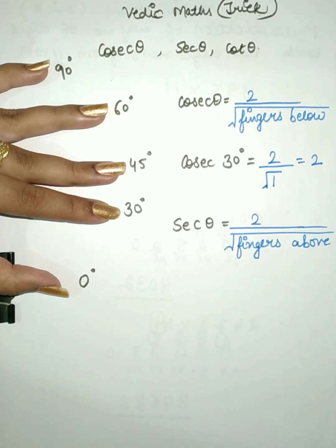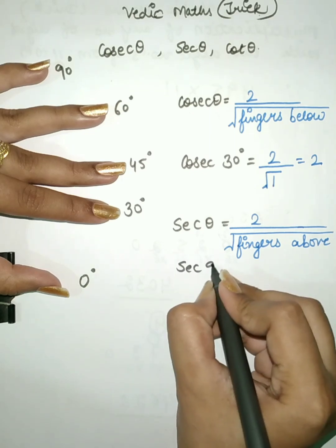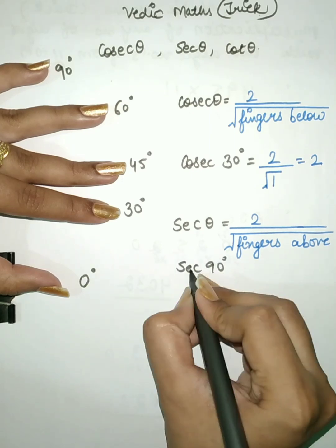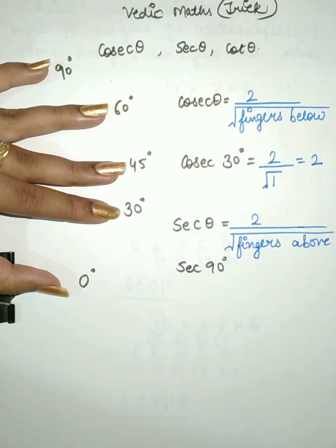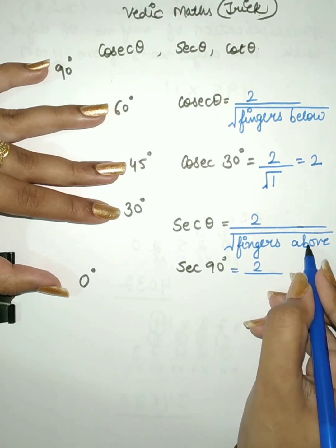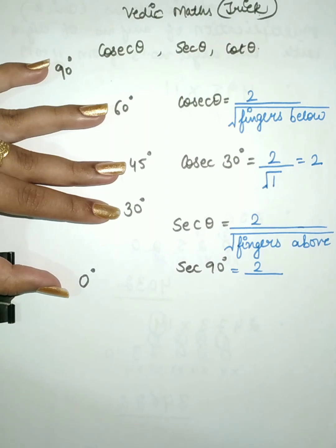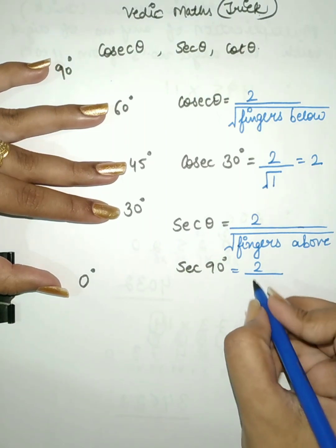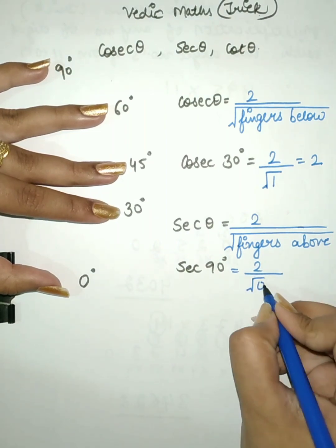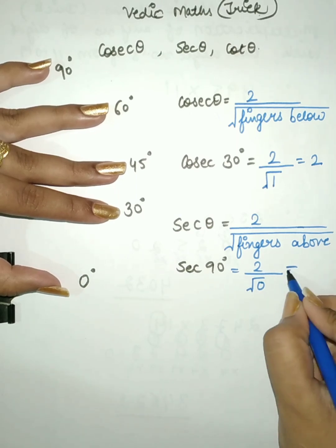Now we have to find the value of secant 90 degree. For 90 degree, the fingers above is 0, so root of 0 is 0. That means any number divided by 0 is infinity, which means not defined.